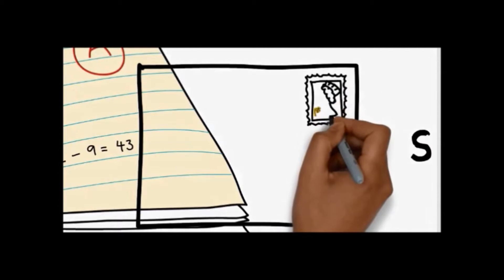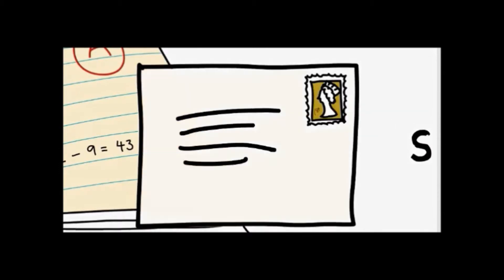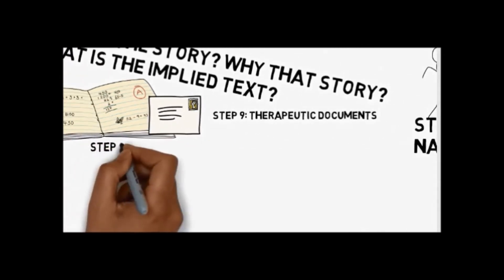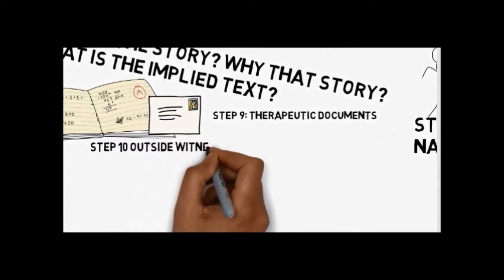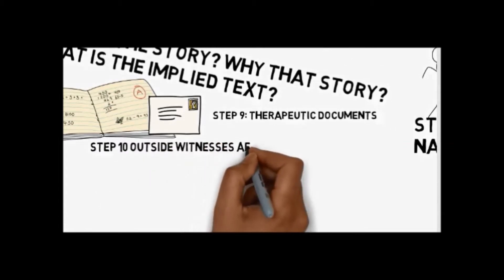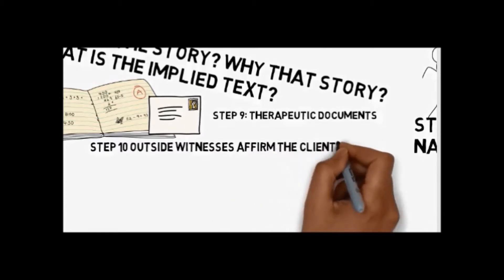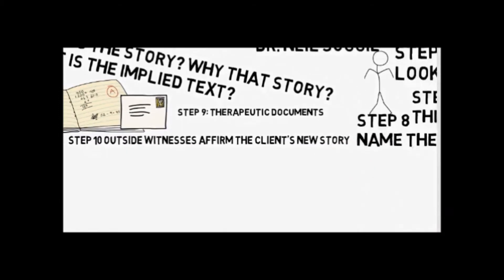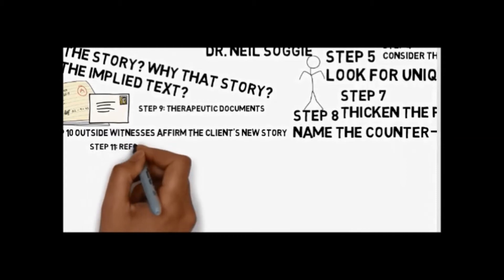Step nine then is to create therapeutic documents that memorialize the counter plot. This can take the form of session notes, letters, cards, questions, musings, reflections that the client has made, key phrases that characterize this new counter plot that the client is re-authoring. The goal here is to begin to consolidate this new counter plot and to strengthen it.